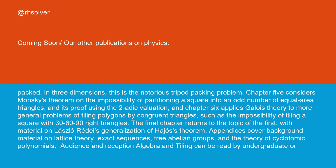and chapter 6 applies Galois theory to more general problems of tiling polygons by congruent triangles, such as the impossibility of tiling a square with 30-60-90 right triangles. The final chapter returns to the topic of the first, with material on László Rédei's generalization of Hajós's theorem.